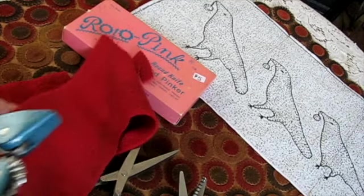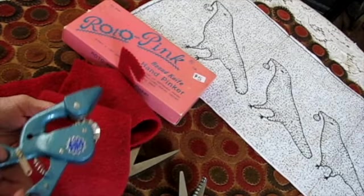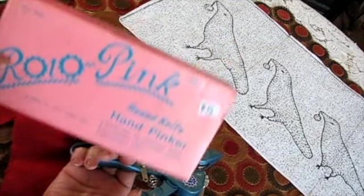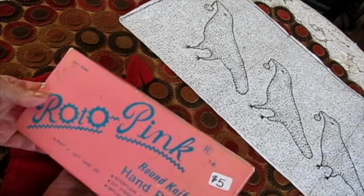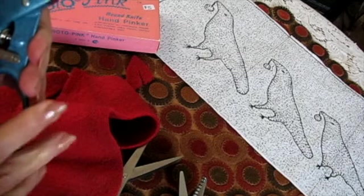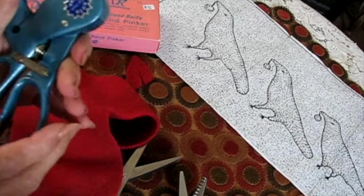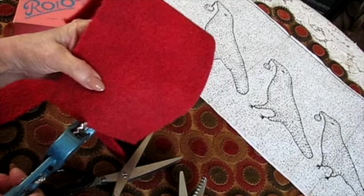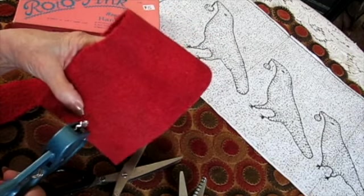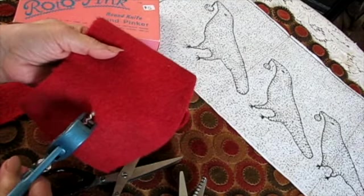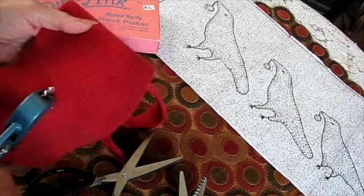So someone asked and I said that I would show these on the video. These are my Roto Pink, my $5 find at the thrift store. Isn't it cute how they lock? And really it's just a set of pinking shears. It takes a little bit of know-how to do it. You just keep pressing the handle and you keep going.